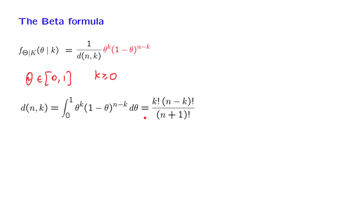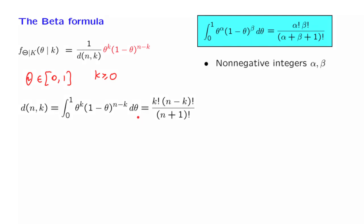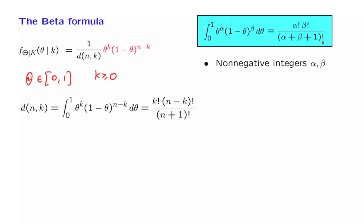What we will actually derive is this same equality, but in slightly different notation. Instead of k, we will use alpha. Instead of n minus k, we will use beta. So here we have alpha factorial times beta factorial. In the denominator, we have the sum of these two coefficients plus 1, which corresponds to alpha plus beta plus 1 factorial. This is what we want to demonstrate.